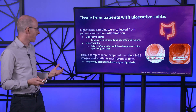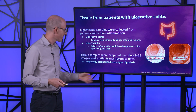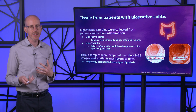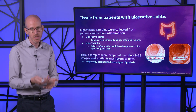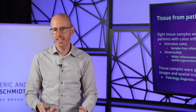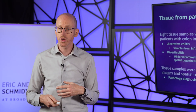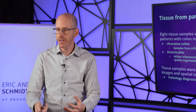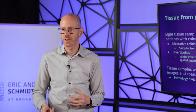Each tissue sample was prepared by a group of doctors and pathologists for processing an H&E image and collecting spatial transcriptomic data. For each tissue, pathologist Angela Shi looked at the H&E stain, diagnosed the disease type and severity, and also looked for evidence of dysplasia — which is a sign of pre-cancer, specifically early abnormal growths in the epithelial cells.